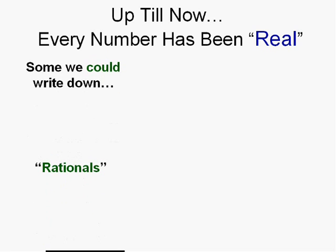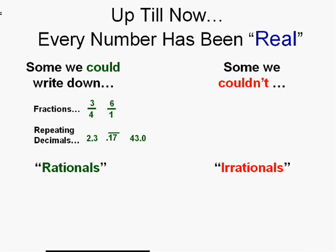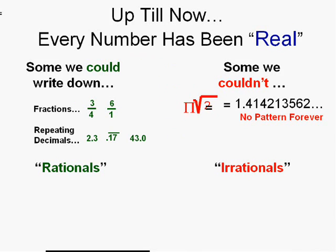Now, consider that up till now, we've been dealing with numbers that we want to say are real. They actually exist. If we could write them down, we called them rationals - fractions we could write down and repeating decimals we could represent. Some we couldn't actually write down, but they were real - they were irrational real numbers, like the square root of 2 or pi. Both rationals and irrationals are real numbers. They actually exist.